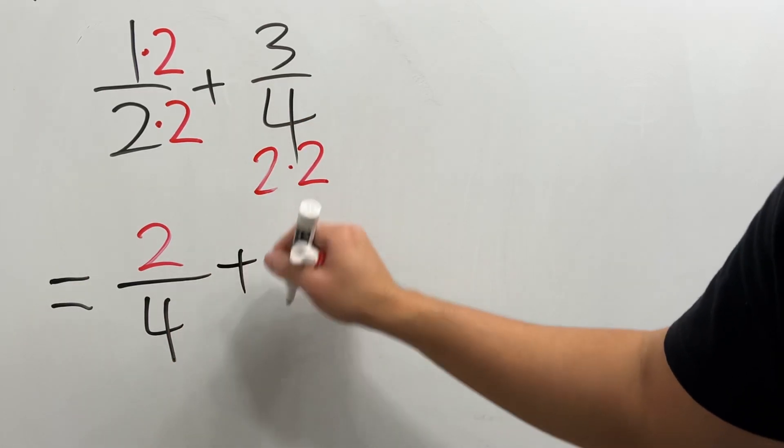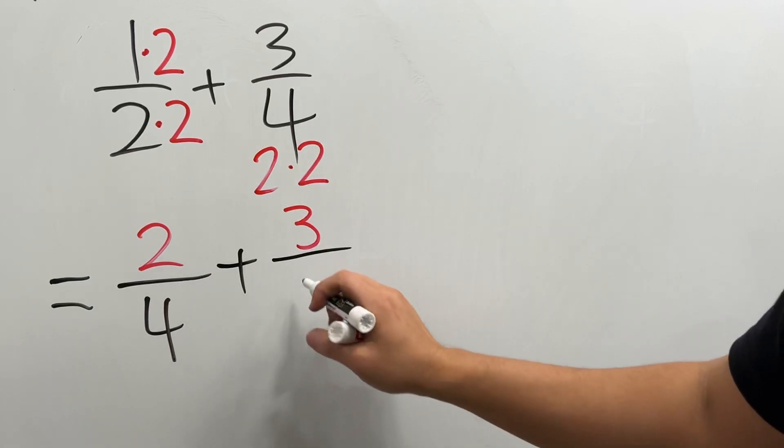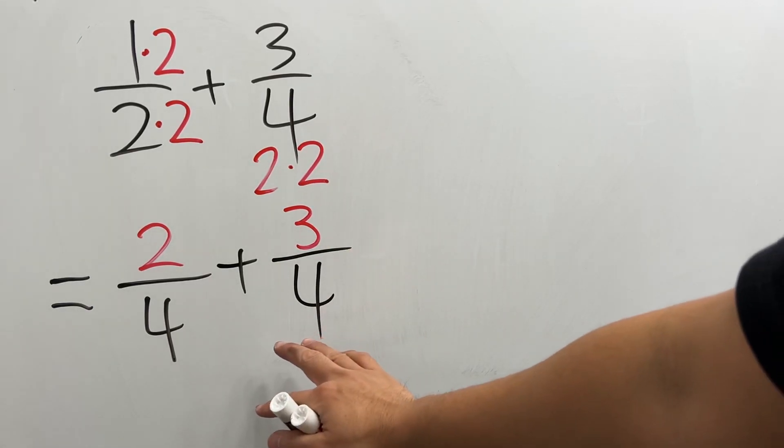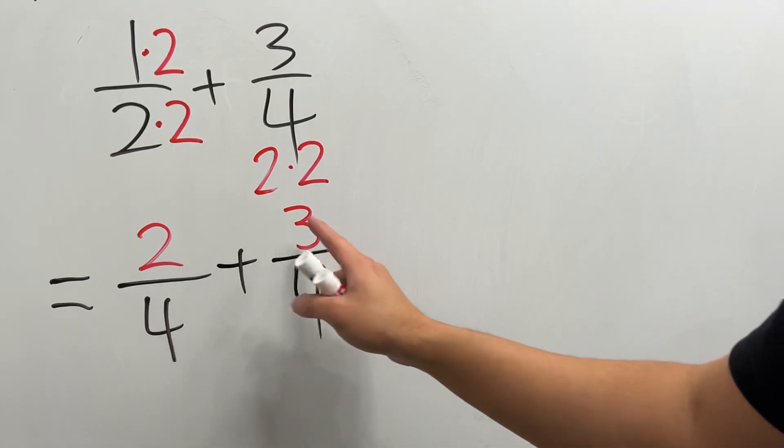And then we add—let's focus on the 3, so I'll put this in red—and then over 4. The reason we do that is because when they have the same denominator, we can just add the numerators.